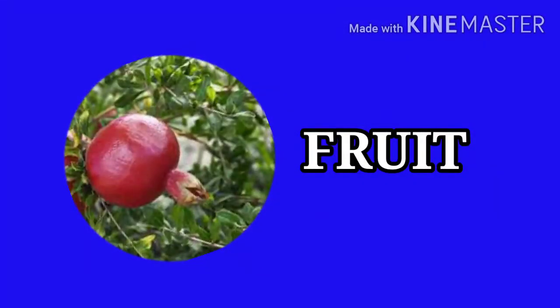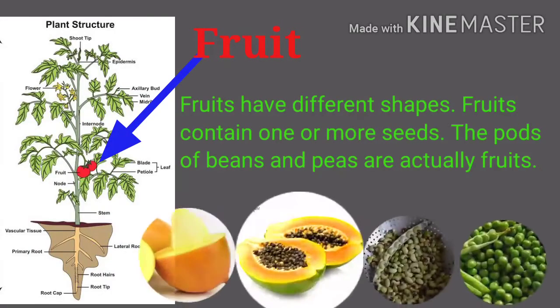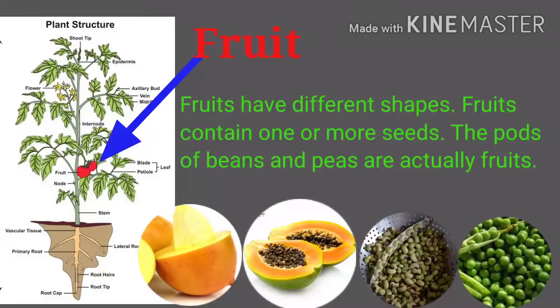Fruits have different shapes and contain one or more seeds. The pods of beans and peas are actually fruits.